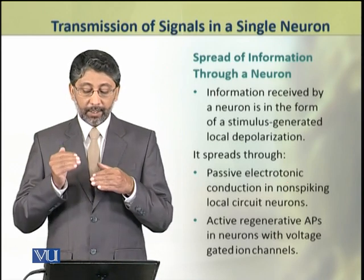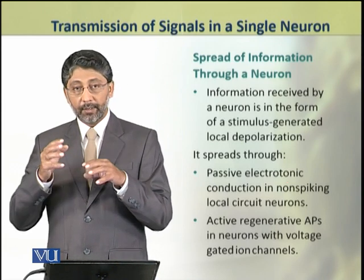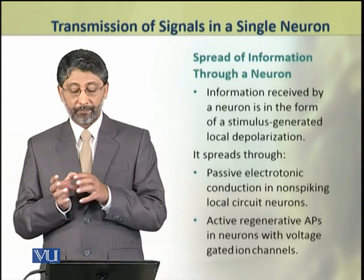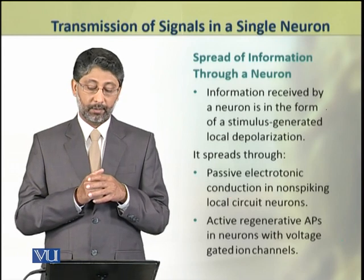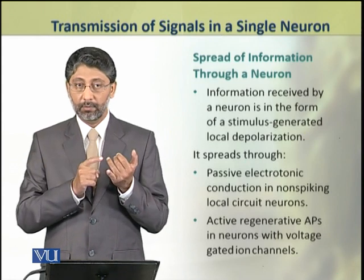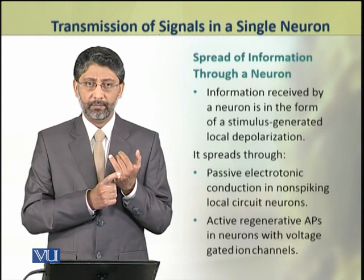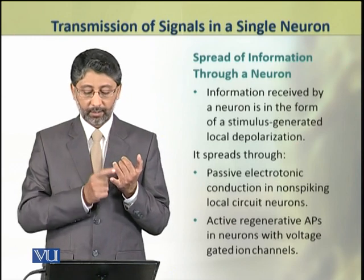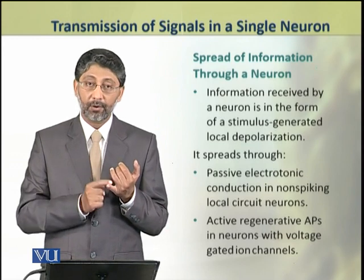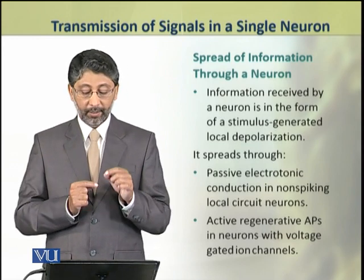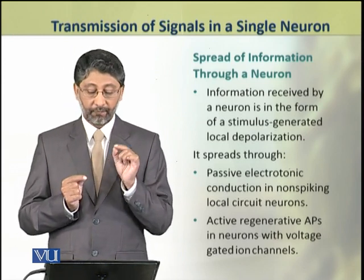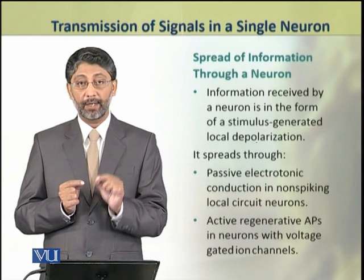The information received at the receptor site produces a stimulus-generated local depolarization. This local depolarization can spread through two methods: passive electrotonic conduction, which happens in non-spiking local circuit neurons, while active regenerative action potentials are generated in those neurons which have voltage-gated ion channels.